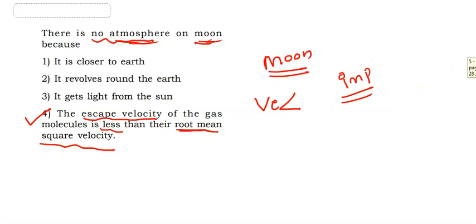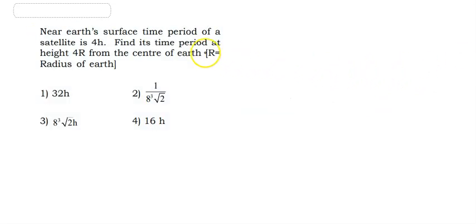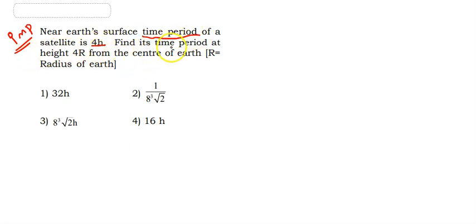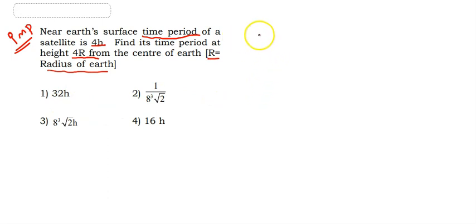Now let's talk about the next important question. Near Earth's surface, the time period of a satellite is 4 hours. Find its time period at a height of 4R from the center of Earth, where R is the radius of Earth. T1 is 4 hours.